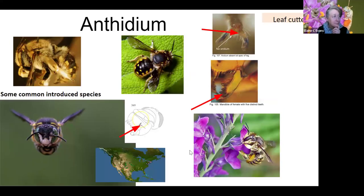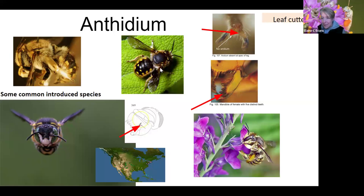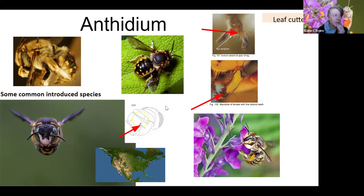Anthidium is another leafcutter-family group that can be common. They're less fuzzy, but they collect hairs from leaves rather than cutting leaf pieces — so they're also called 'carder bees.' You'll often see these near fuzzy plants like lamb's ear, gathering material to line their nests. There are both native and introduced species in the upper midwest.